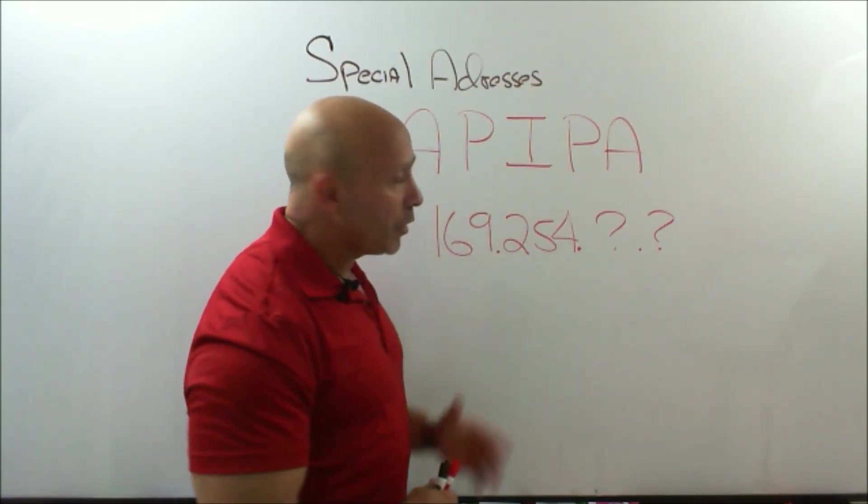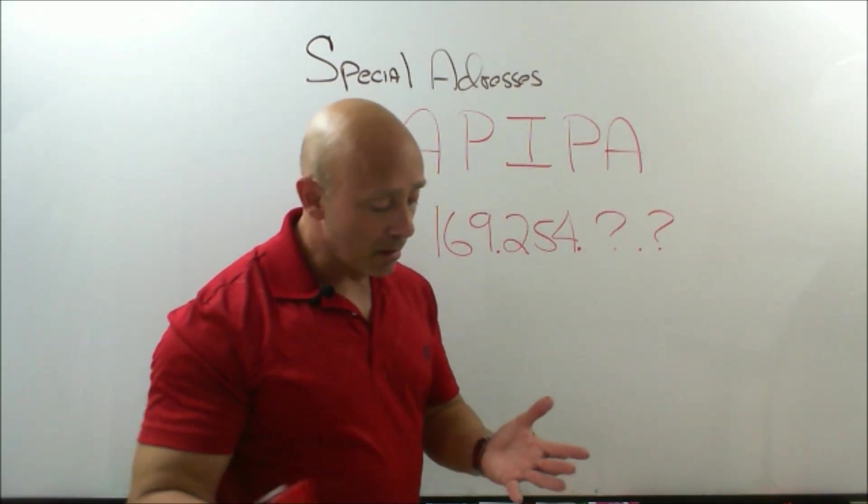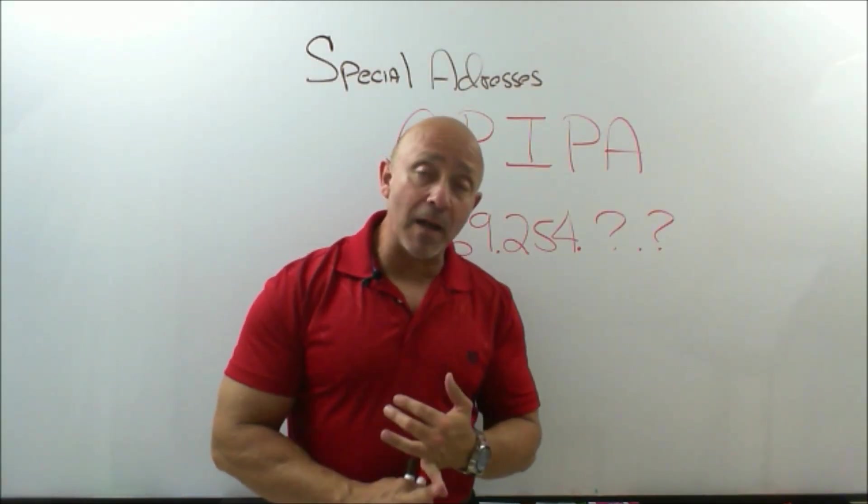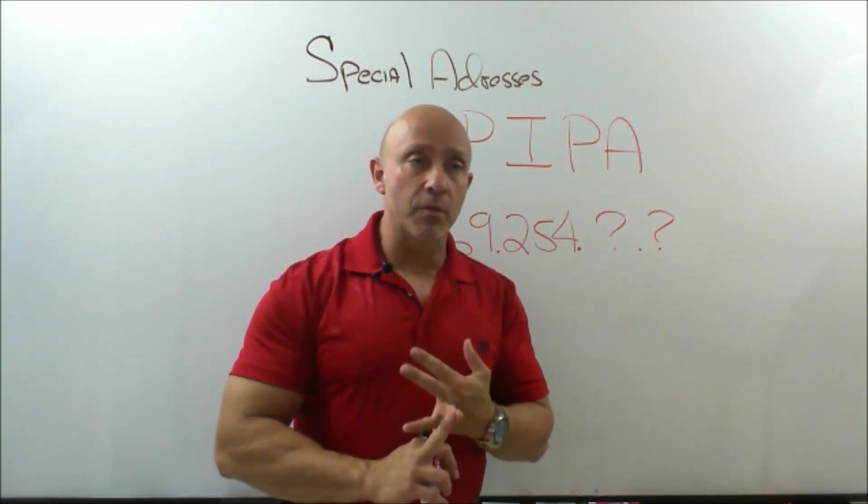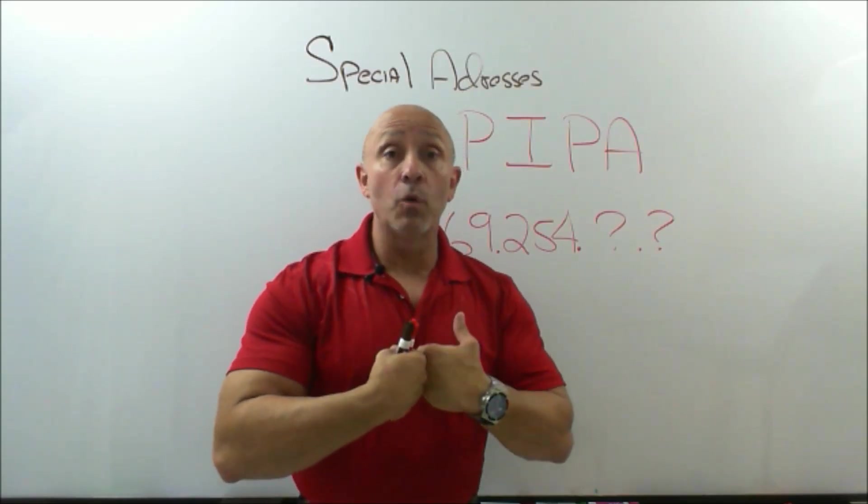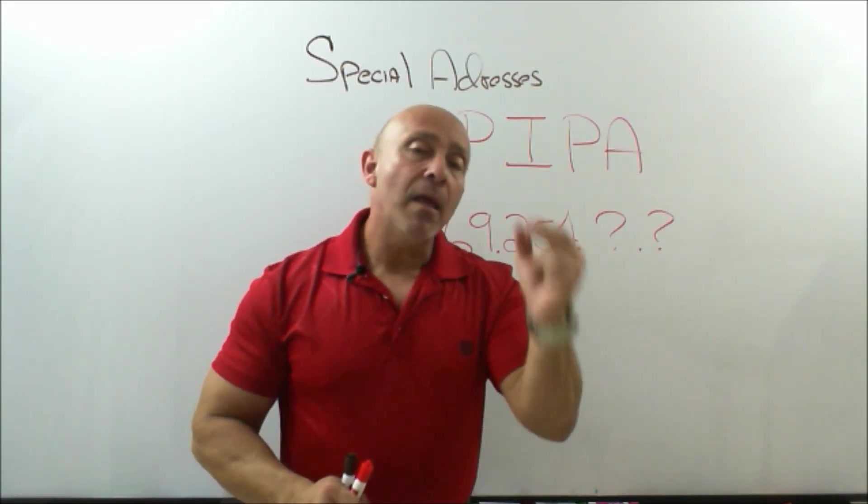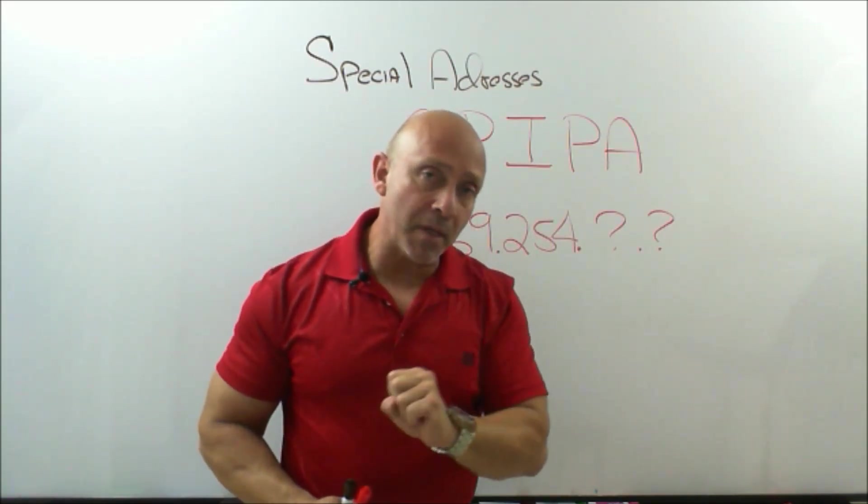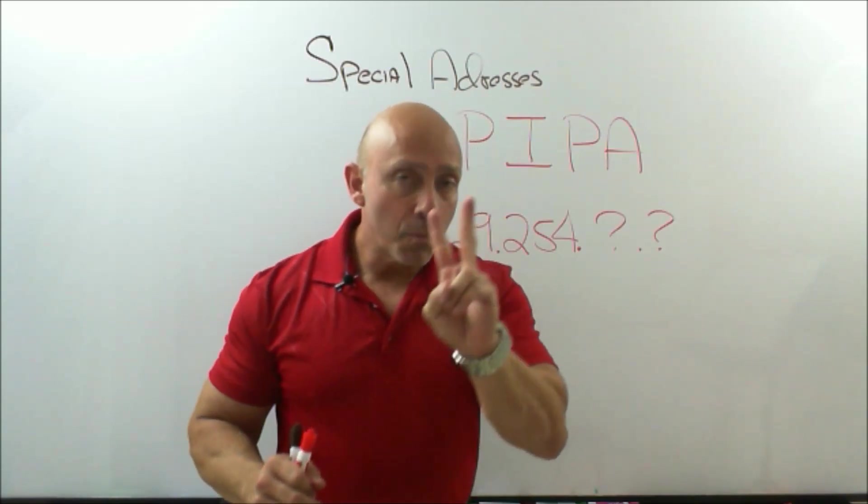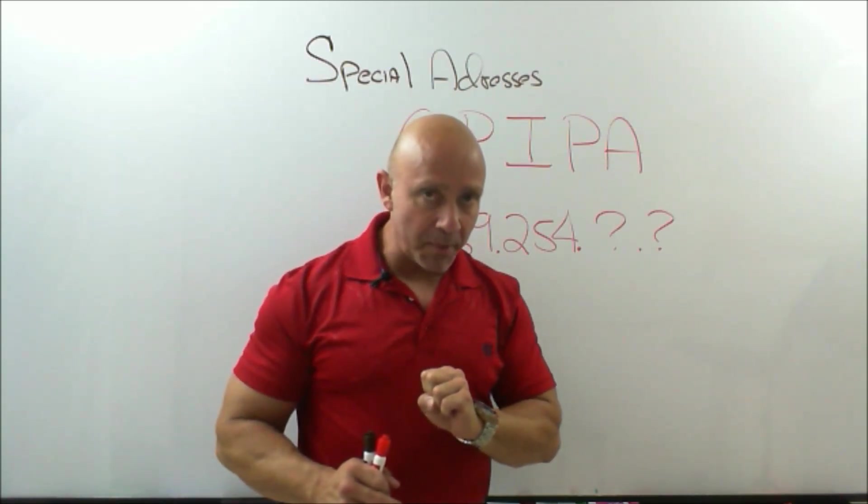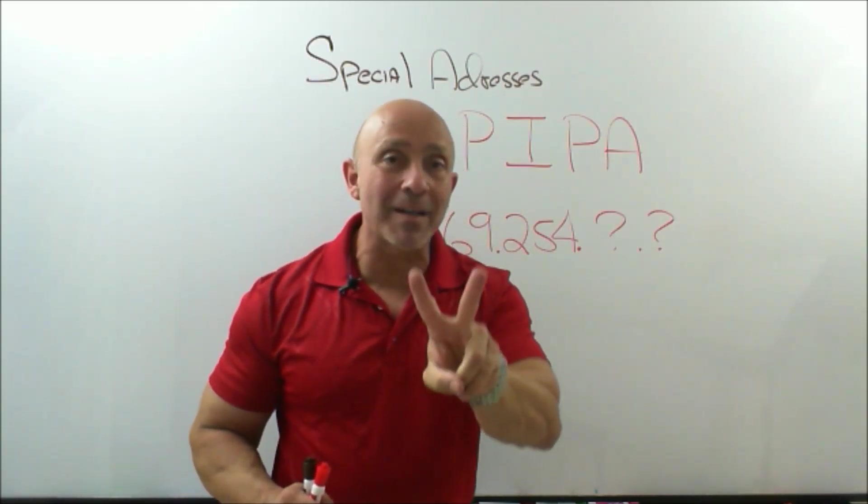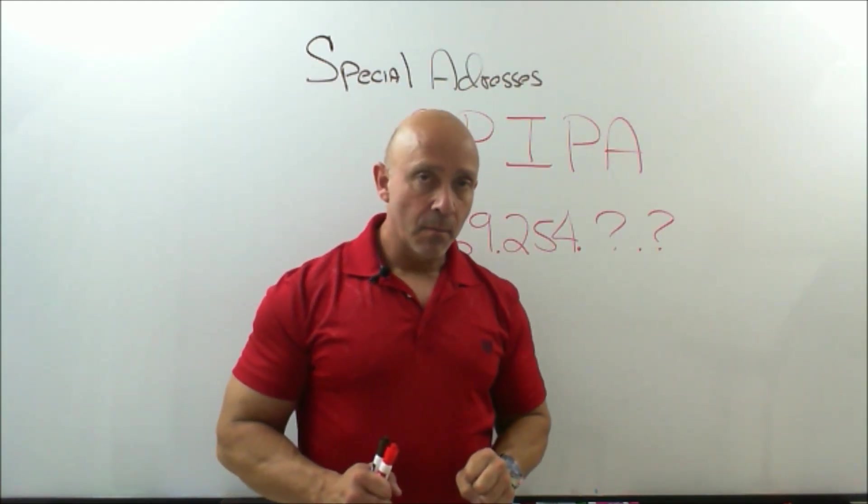So those were your special addresses. Your network ID that identifies the network, your broadcast address that will go out to the entire segment within a broadcast domain. But remember, your network ID and your broadcast address are the two IP addresses that you subtract on the host side, because you do not assign those two IP addresses. They're considered invalid addresses.